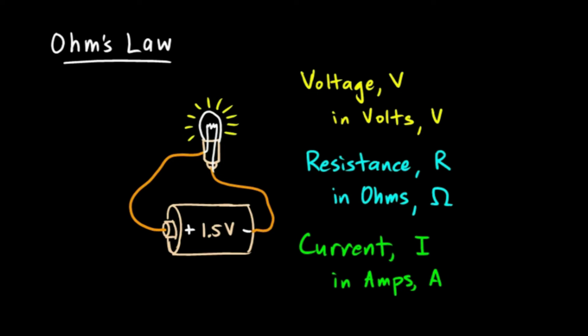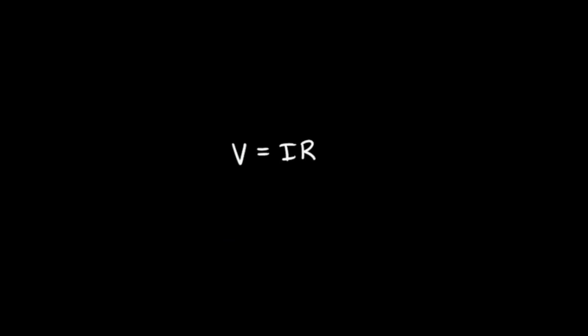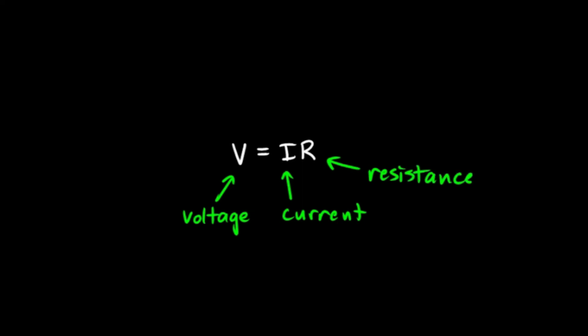Here's Ohm's Law. These three things — the voltage, the resistance, and the current — are all related by a simple mathematical equation: V equals I times R. V is the voltage, I is the current, and R is the resistance. This equation is known as Ohm's Law. It's not really a law in the sense that it's universally applicable like other laws of physics, but it works incredibly well for most conductors across a wide range of temperatures and conditions, accurately describing how things behave in the real world.